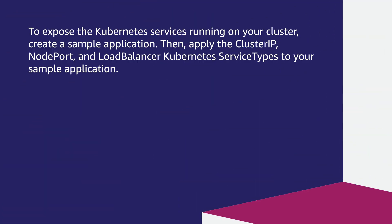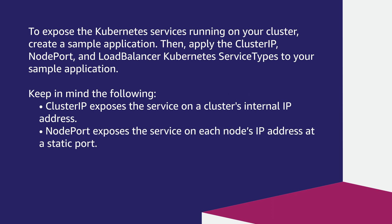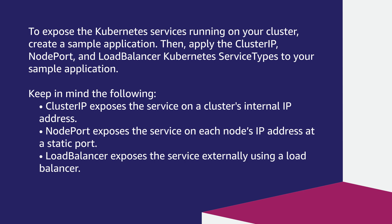To expose the Kubernetes service running on your cluster, create a sample application, then apply the ClusterIP, NodePort, and the LoadBalancer Kubernetes service types to your sample application. Keep in mind the following: ClusterIP exposes the service on the cluster's internal IP address. NodePort exposes the service on each node's IP address at a static port. LoadBalancer exposes the service externally using a load balancer.